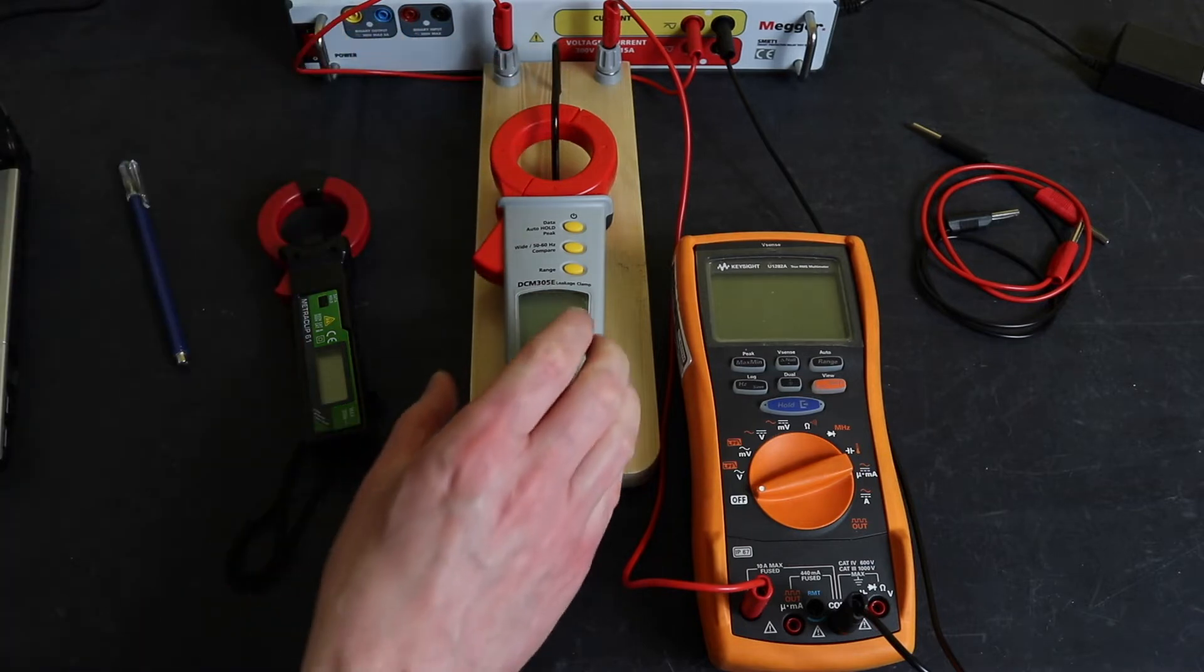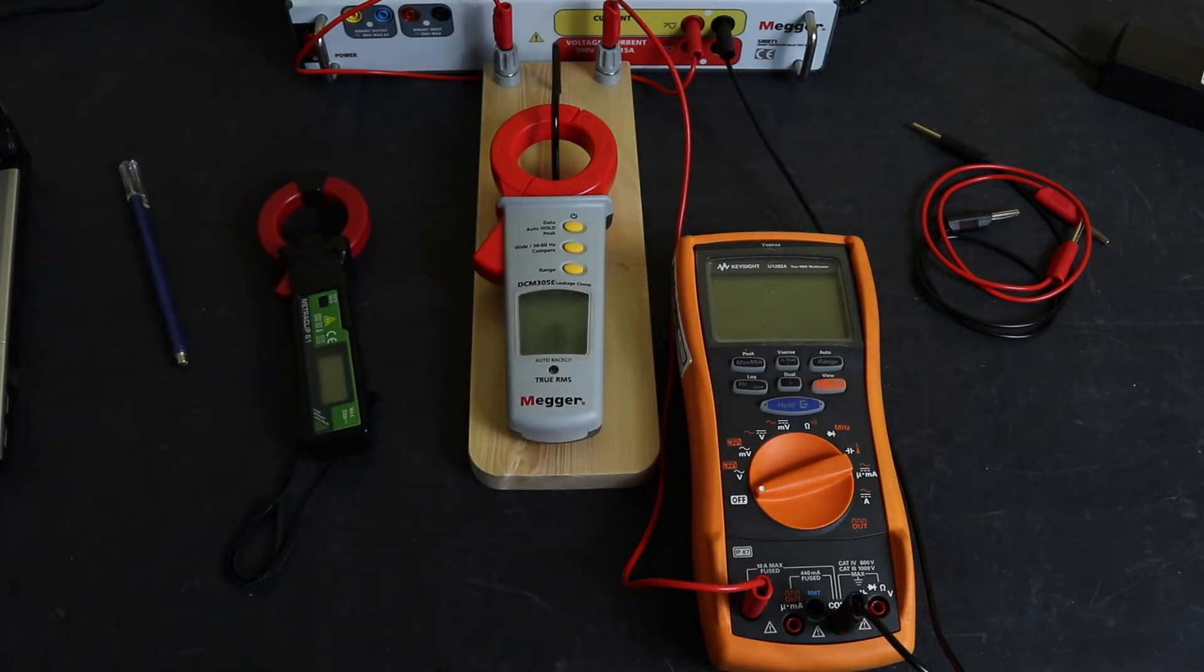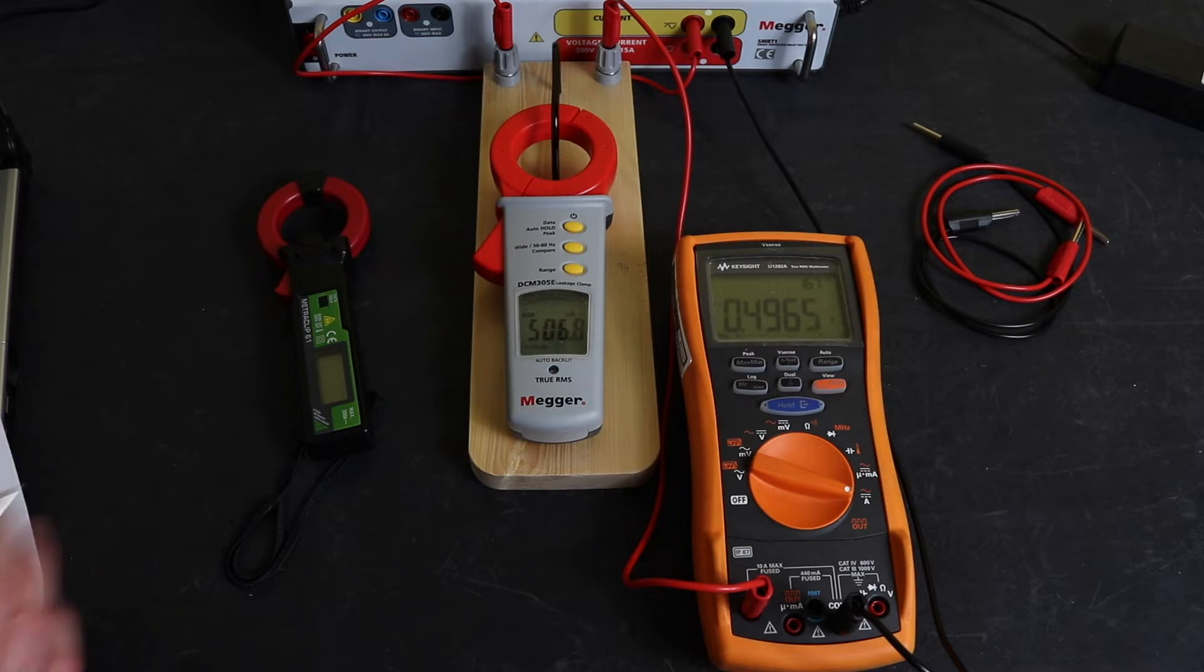Okay, so we're running on 500 milliamps here on the Mega. This is the instrument that was a little bit stroppy. 506.7 against 496.6, which is probably even worse because I did the original one at 500 milliamps.